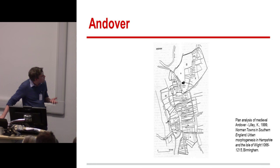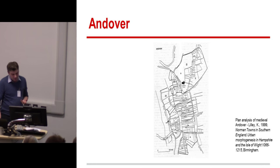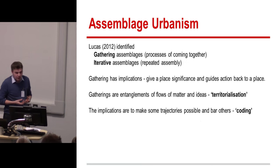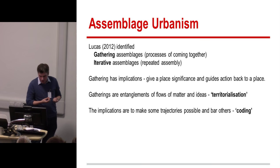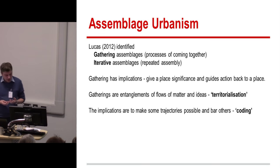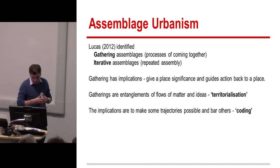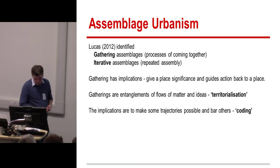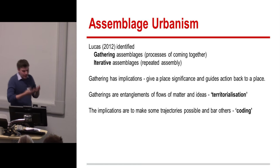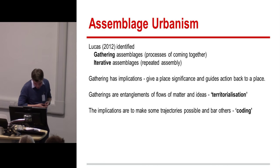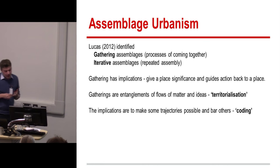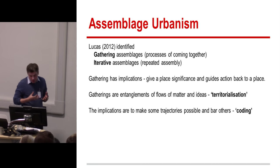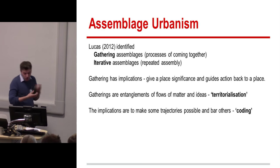So how can we apply some of this theoretical thought to the understanding of Andover? Gavin Lucas has identified two forms of assemblage: gathering assemblages and iterative assemblages. Gathering assemblages are processes of coming together—they localise action and materialise in the performance of place; one example could be the act of deposition. Iterative assemblages are more persistent; they are repetitive improvisations. These processes of gathering have implications—they centre relations in particular places, giving a place significance and therefore guiding future action back towards that place.